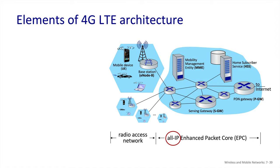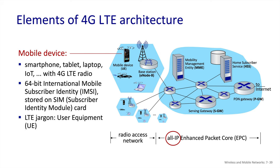Prior to 4G, the packet core was divided into separate voice and data services, but with LTE these are converged and all services are provided over an IP network in the core. The UEs are identified by a number stored on their SIM card known as the IMSI number — the international mobile subscriber identity — which is intended to be unique worldwide and is a 64-bit number.